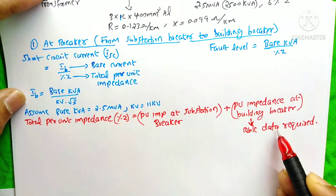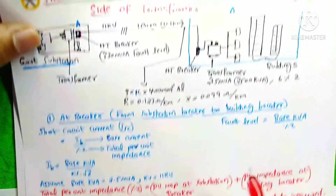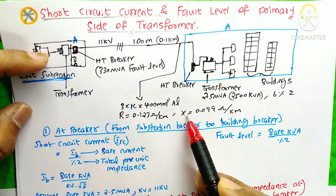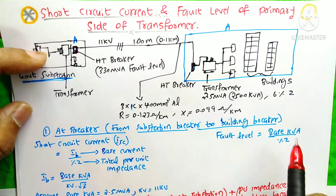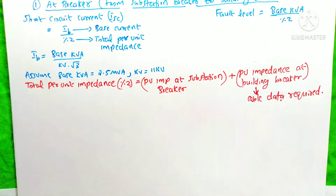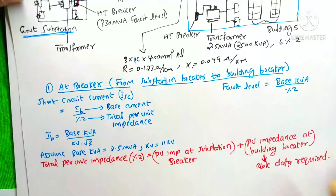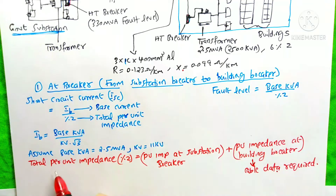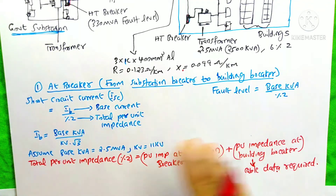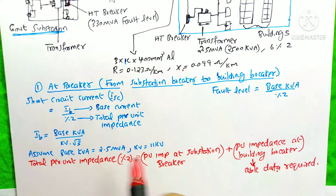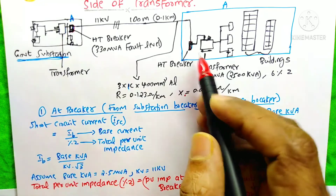For the per unit impedance at the building breaker, we need the cable data. I already mentioned the cable data is 3 × 1-core 400 mm² with the given resistance and reactance values. If you don't have this data, you can find it on the internet or from the cable datasheet. The key tip here is: the total per unit impedance is the challenging part of this calculation. All other data — base KV (assumed) and line KV — are easy to get.